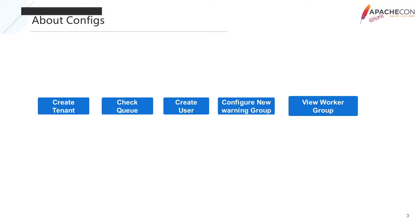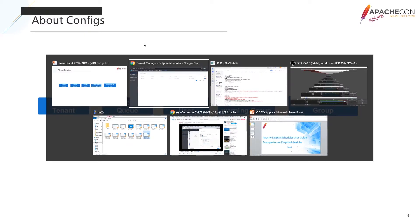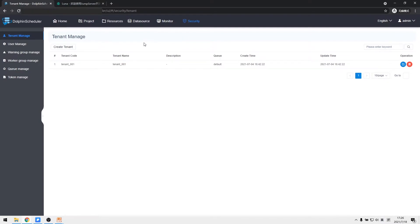Our overall configuration process includes: create tenant, check queue, create user, configure a new warning group, view worker group, and then switch to the new user to execute the workflow.